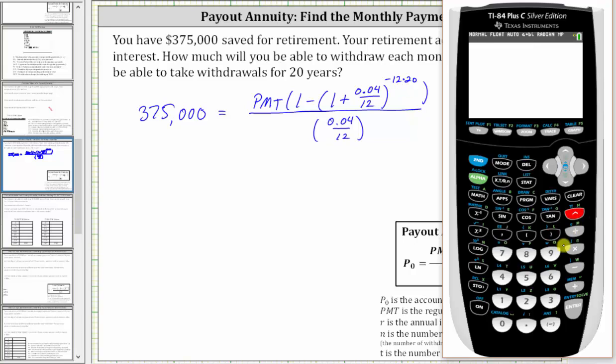This is raised to the power of negative 12 times 20. So we press the exponent key, negative 12 times 20. And now we press the right arrow to get out from the position of the exponent, closed parenthesis, and then divided by, in parenthesis, 0.04 divided by 12.